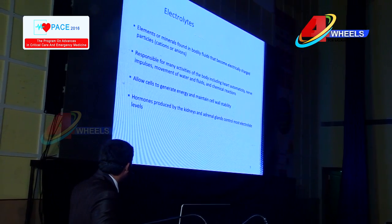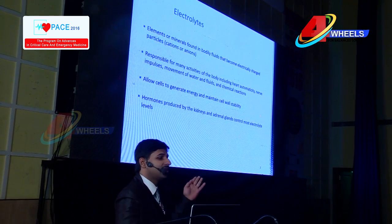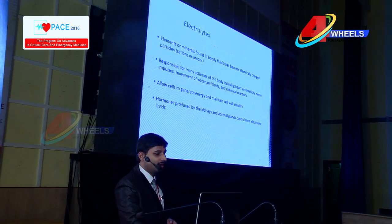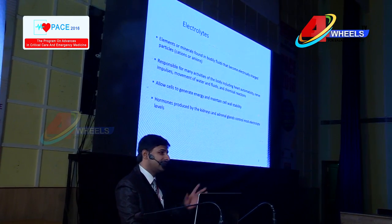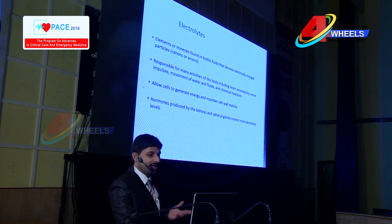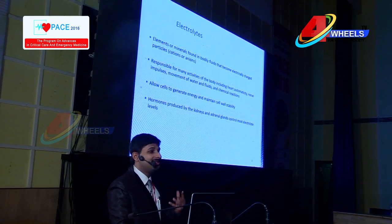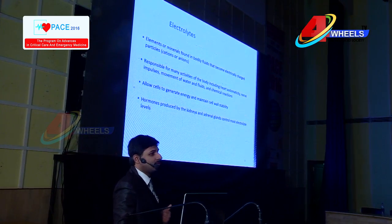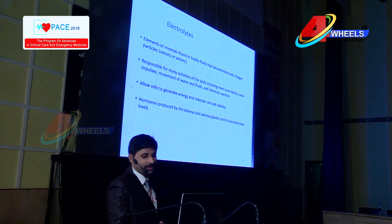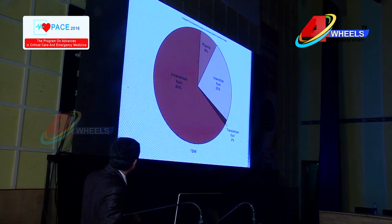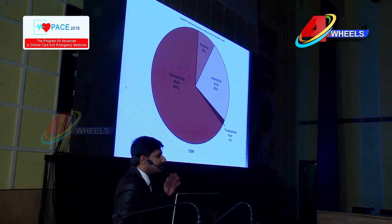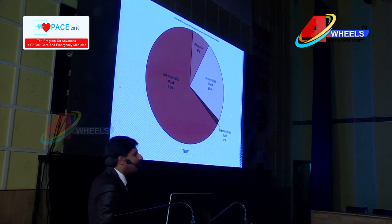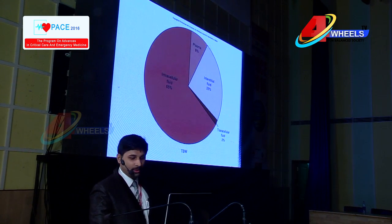Electrolytes are elements and minerals found in the body that are electrically charged particles, especially cations and anions, and are responsible for many activities of the body — like movement of water and fluids, chemical reactions, allowing and generating energy, and maintaining cell wall stability. Hormones produced by the kidneys and adrenal glands control most of the electrolytes. We have 65% intracellular fluid, 8% plasma, 25% interstitial fluid, and 2% transcellular fluid — all constituting our total body weight.